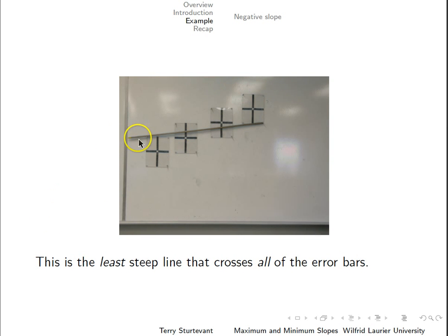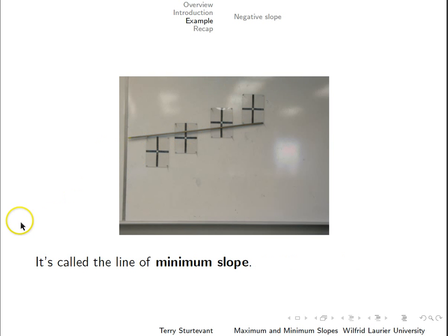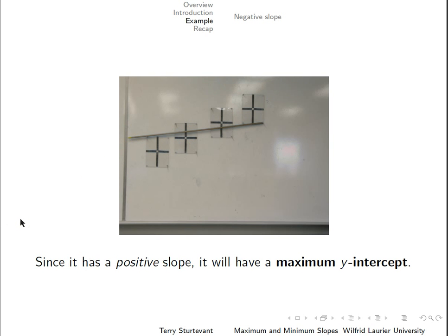This is the least steep line that crosses all of the error bars. You'll notice it catches this bottom corner of this point, this top corner of this point, and goes through these points. It's called the line of minimum slope, and since it has a positive slope, it will have a maximum y-intercept. The intercept is up here.